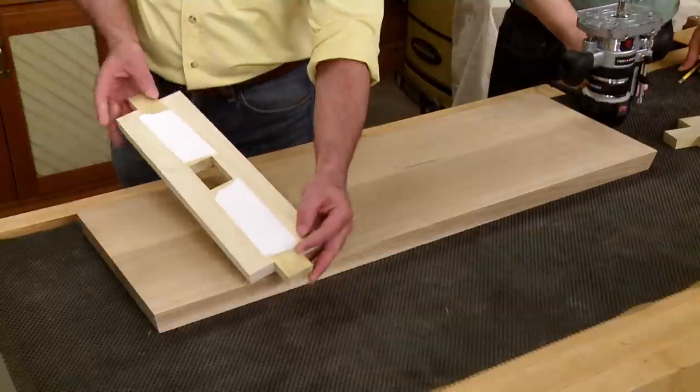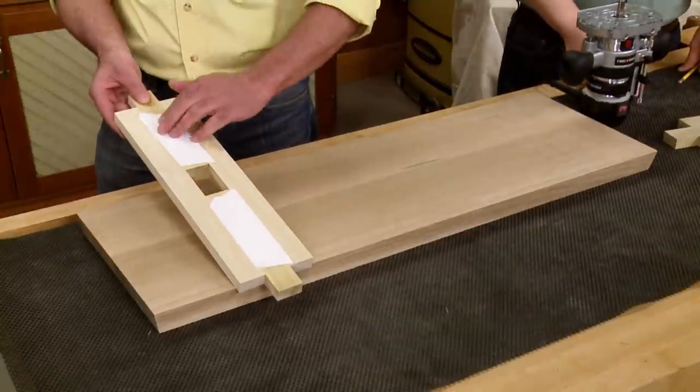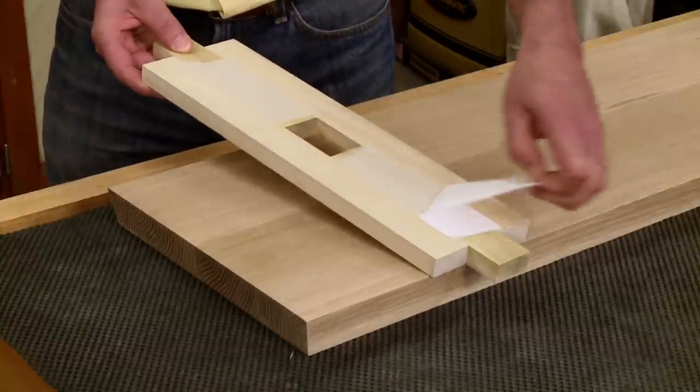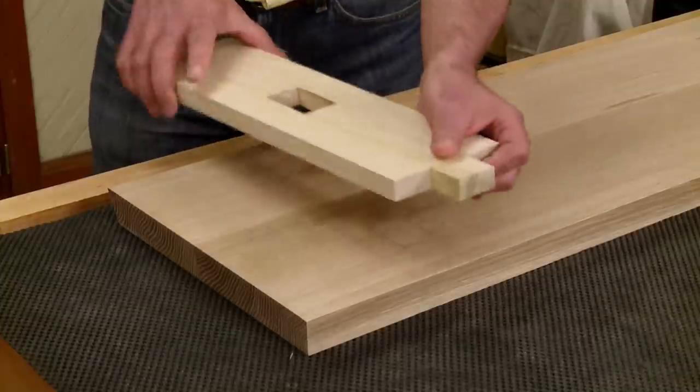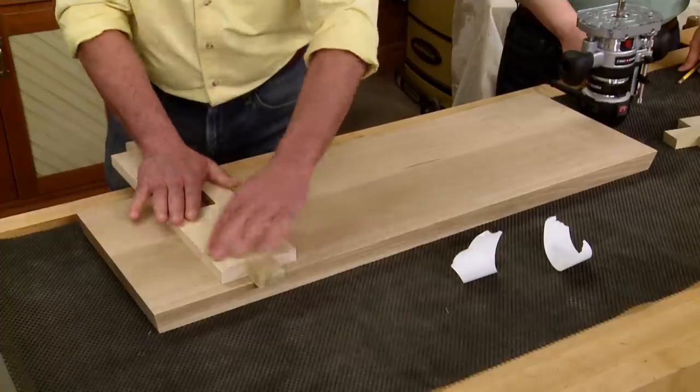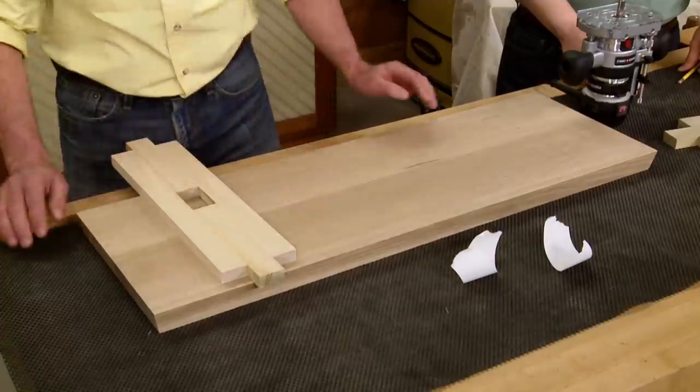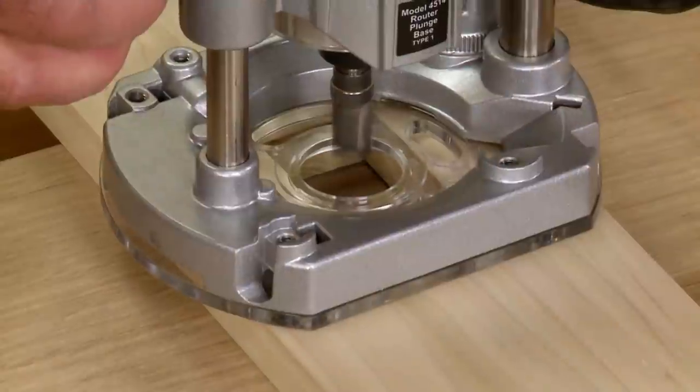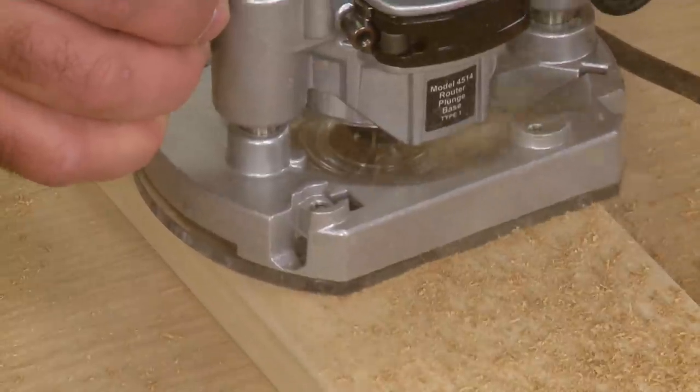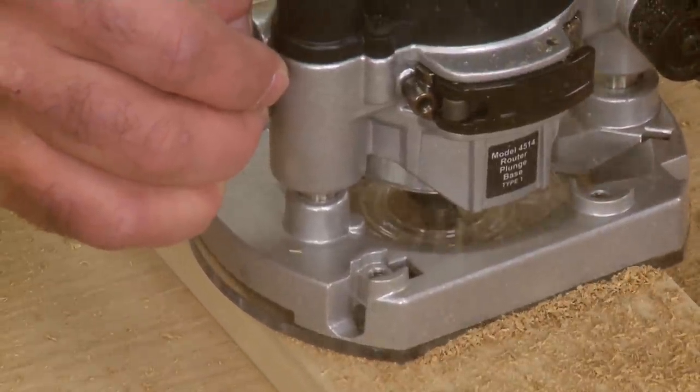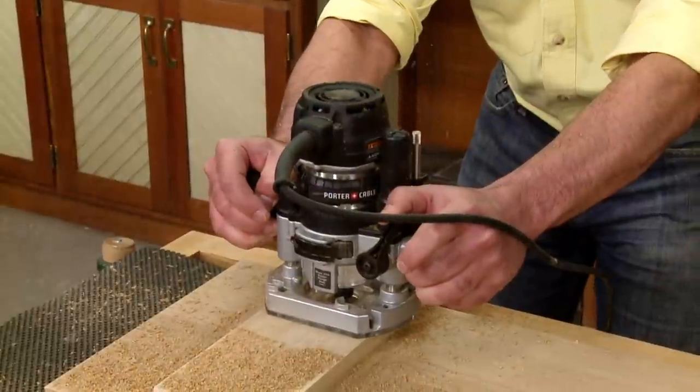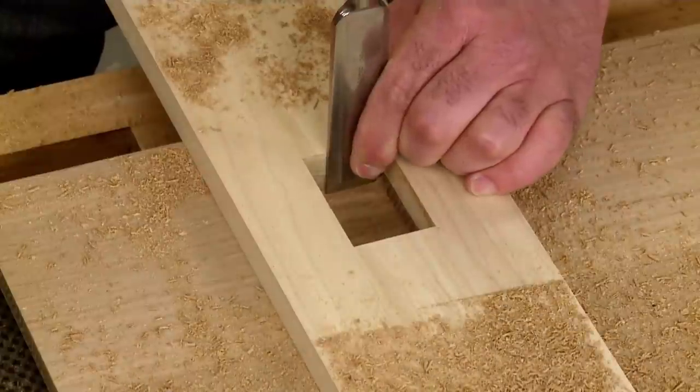Now, on the back side of the template, I've got some double-stick tape here and here. So, I'm going to peel the paper off. There we go. Now, I'm going to position the template right over my layout lines and press it down. Now, I can use the router, plunge the bit into the workpiece, route around the outside, then route out the center, and finally, I'll square up the corners with a chisel.